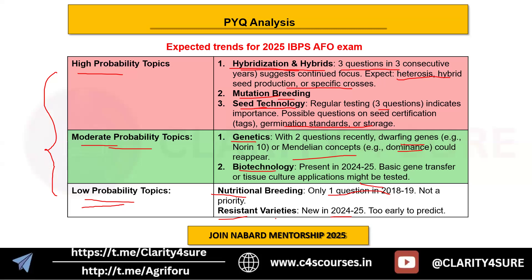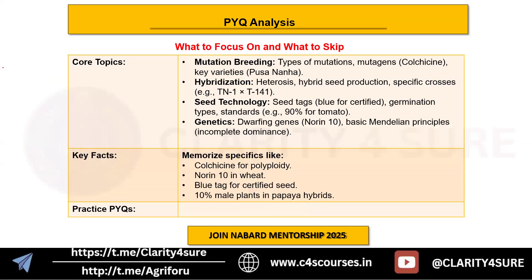Now let's see what to focus on and what to skip. Topics are divided into core topics you must cover, key facts, and practice PYQs. For core topics, the highest probability ones are mutation breeding, hybridization, seed technology, and genetics and plant breeding — you must cover all four of these for sure.